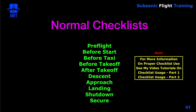Also tabbed would be the normal checklist section. It's a green tab in the paper QRH and it leads you from the pre-flight checklist all the way through the securing checklist, including pre-flight, before start, before taxi, before takeoff, after takeoff, descent, approach, landing, shutdown, and securing. For more information on proper checklist usage, see my video tutorials on checklist usage part one and part two.